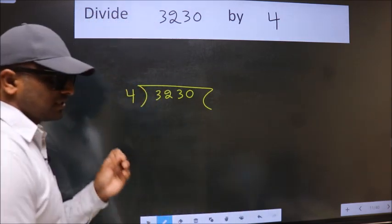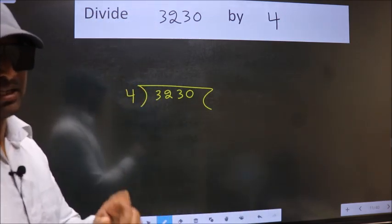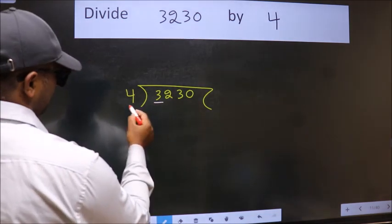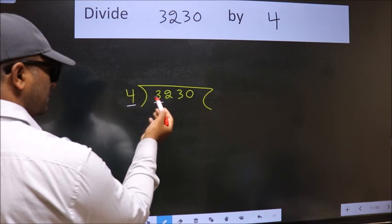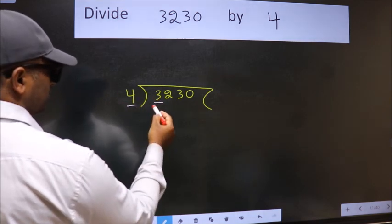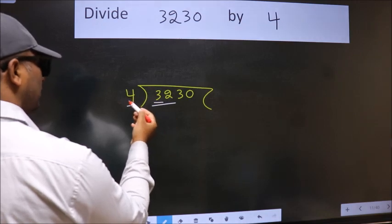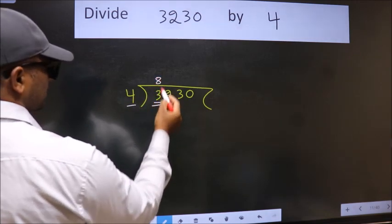This is step 1. Next, here we have 3, here 4. 3 is smaller than 4. So we should take two numbers, 32. When do we get 32 in 4 table? 4 times 8 is 32.